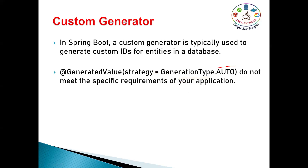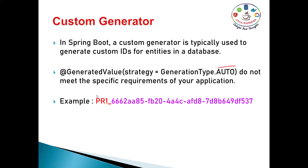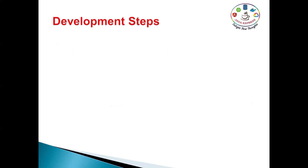Normally you use strategy equal to generation type dot auto, generation type dot identity, or generation type dot sequence — these are the standard generator types. But with our use case, auto will not work for our application. For example, if you observe, 'PR1' is a kind of prefix and the remaining part is auto-generated. This total alphanumeric value is how you can uniquely identify your record by using this ID.